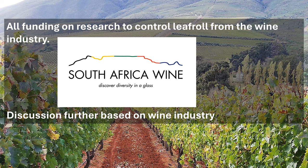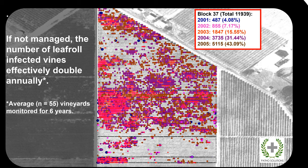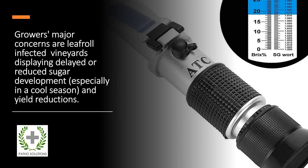All funding on research to control leafroll in South Africa has been through the South African wine industry, and most of our discussions are based on our experiences in that industry. If not managed, the number of leafroll-infected vines will effectively double annually — based on an average of 55 vineyards monitored over a six-year period. In the example shown on the slide, you can see it moves from 4% to 7%, 15%, 31%, up to 43%. Growers seldom look at individual vines but really start picking up the effect of the virus once whole vineyards start displaying delayed or reduced sugar development.